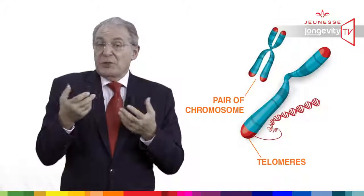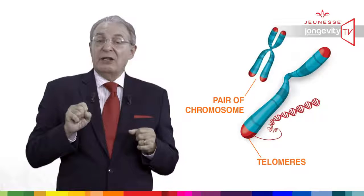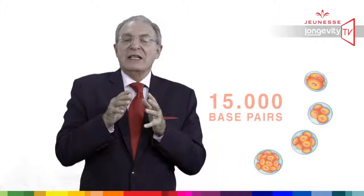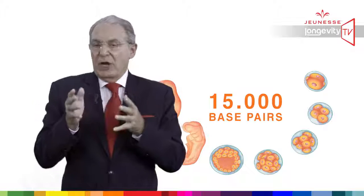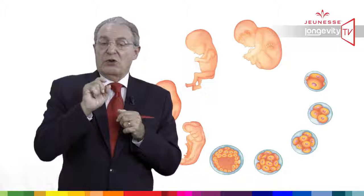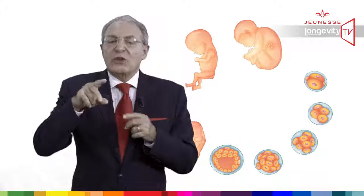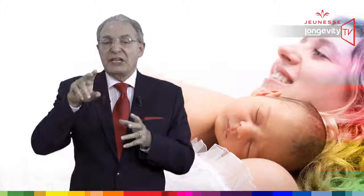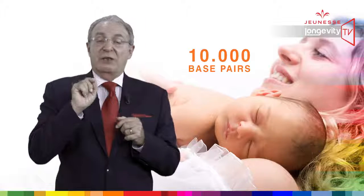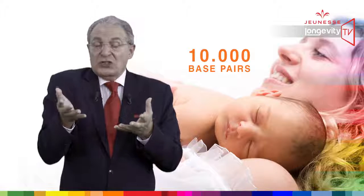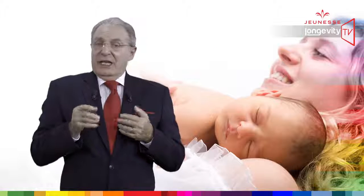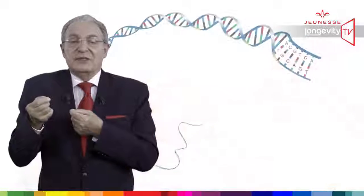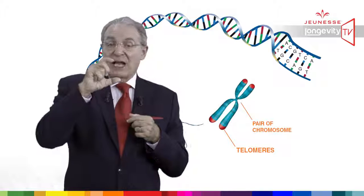Today we can measure the biological age of cells by the length of the telomere. When we are conceived, the embryo has about 15,000 base pairs in its telomere. By the way, a base pair is a standard unit of measurement in the chromosome, and the total length of a DNA strand is 3 billion base pairs. So after many replications, a newborn has only 10,000 base pairs in each telomere — we have already lost 33% of our telomere length.